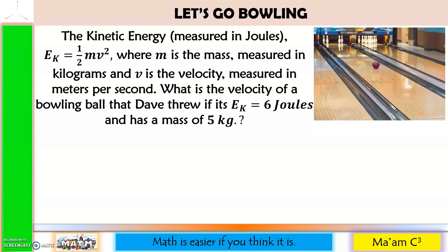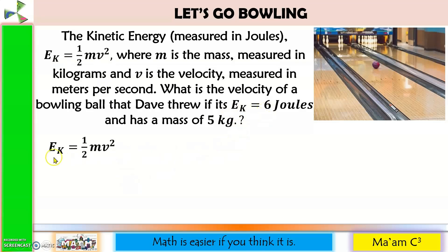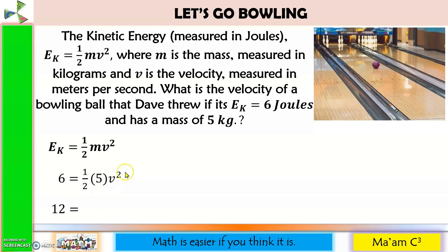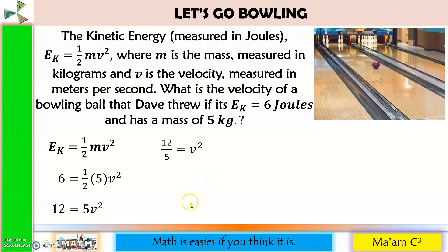Another one: the kinetic energy measured in joules is equal to 1 half mv squared, where m is the mass in kilograms and v is the velocity in meters per second. What is the velocity of a bowling ball if its kinetic energy is 6 joules and its mass is 5 kilograms? Rewriting the formula and substituting: kinetic energy is 6, mass is 5. Cross-multiplication gives 6 times 2 equals 12, so we have 5v squared. Dividing both sides by 5 gives 12 over 5 equals v squared. Extracting the square root on both sides — we need to rationalize the denominator by multiplying both numerator and denominator by square root of 5.